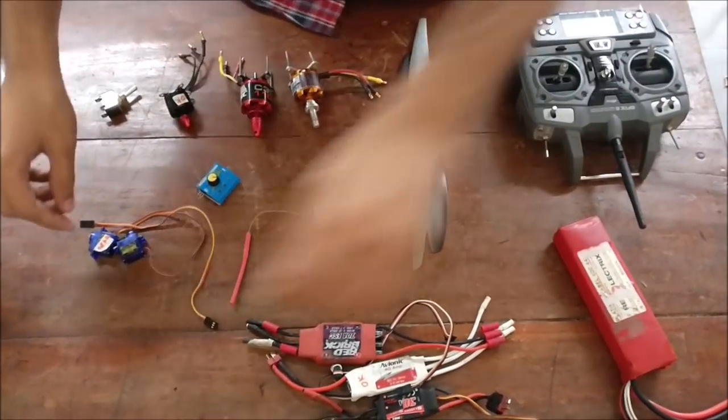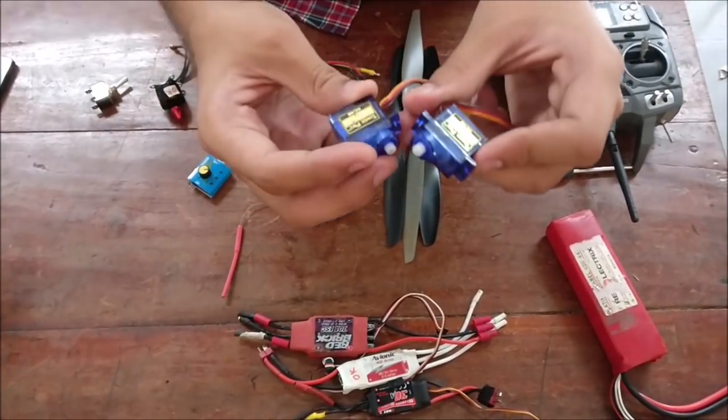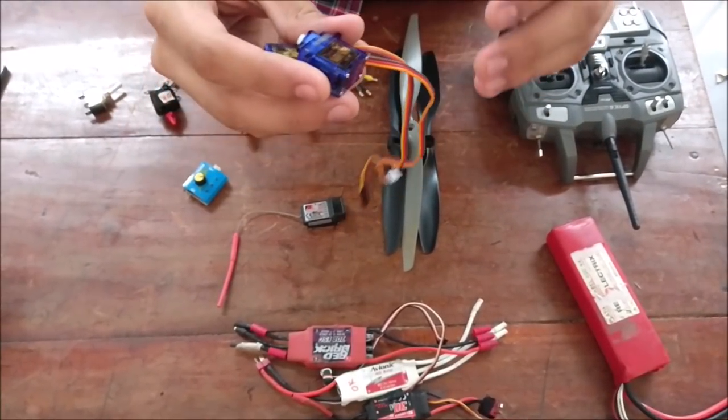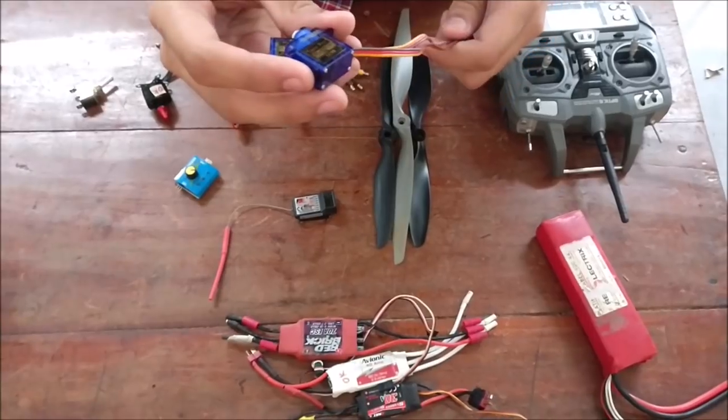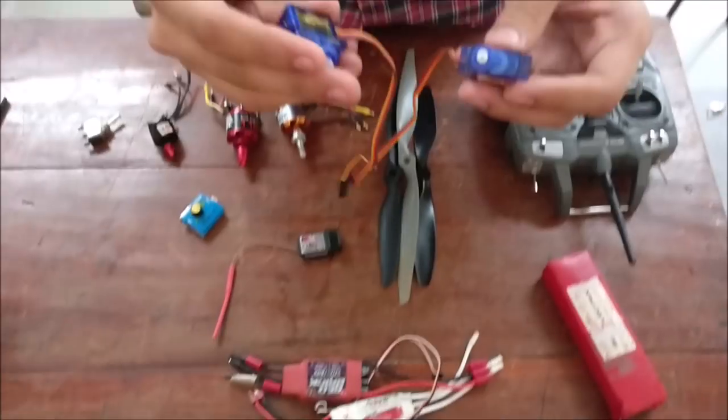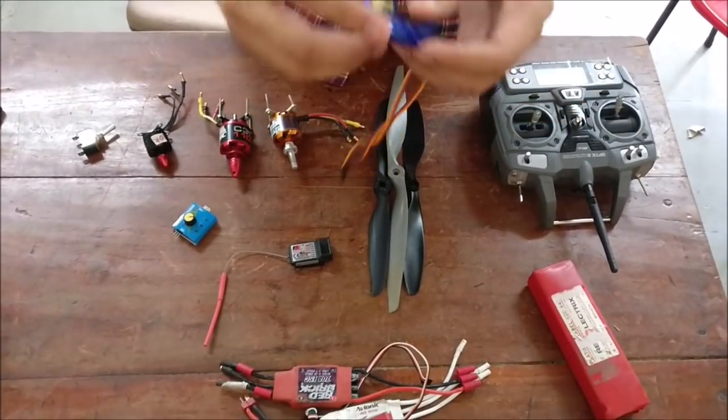Also these are the servo motors. They are fixed in the elevators and the ailerons of the plane and help move them. They help in giving thrust and lift to the plane.